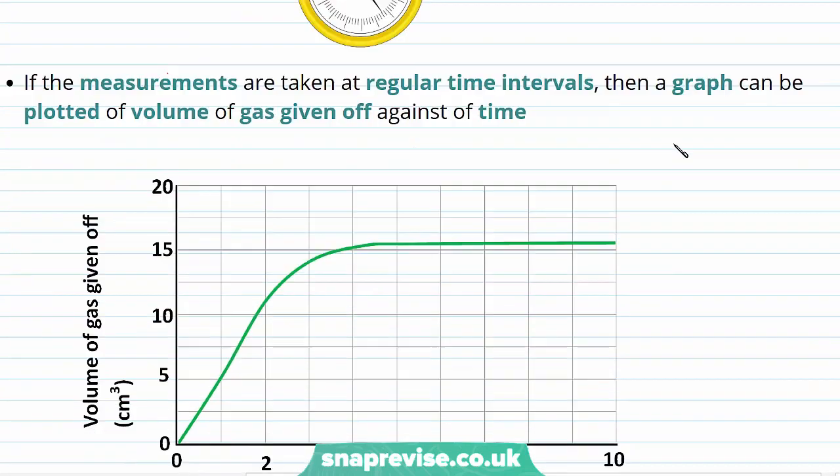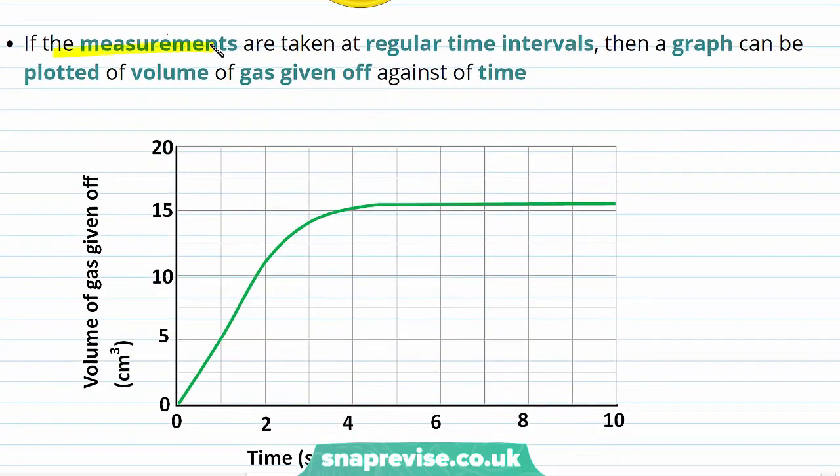In a similar way as to with the mass balance, if measurements of the amount of gas given off are taken at regular time intervals, a graph can be plotted of the volume of gas given off against time.